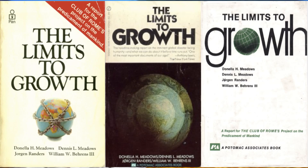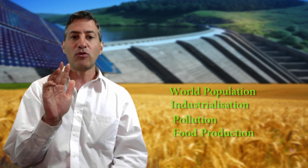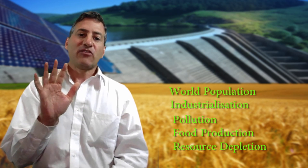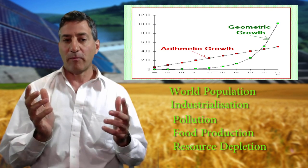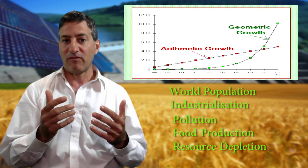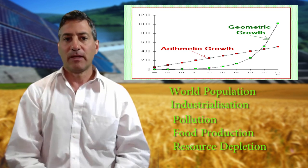The original version presented a model based on five variables: world population, industrialization, pollution, food production, and resource depletion. These variables are considered to grow exponentially, while the ability of technology to increase resource availability is only linear. The authors intended to explore the possibility of a sustainable feedback pattern that would be achieved by altering growth trends among the five variables under three scenarios, noting that their projections were indications of the system's behavioral tendencies rather than firm predictions.